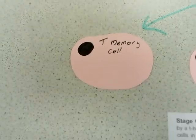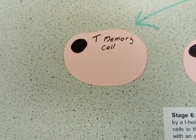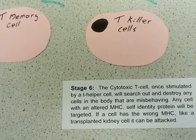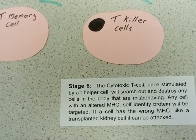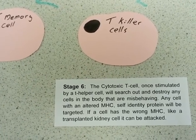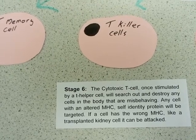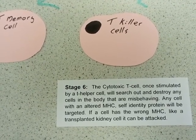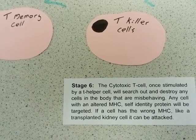They can form T-memory cells to help speed up the immune response later. They can also form cytotoxic T-cells, or T-killer cells. T-killer cells, when stimulated by a T-helper cell, will search out and destroy any cells in the body that are presenting the antigen that was on that original macrophage.